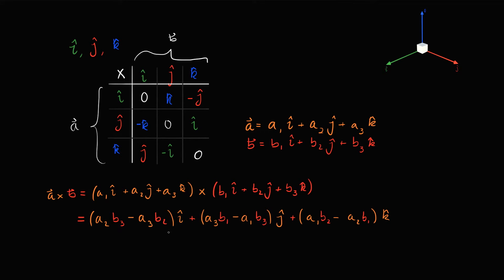So this tells us how to get each component of the cross product from our components of A and B. Working with this is quite cumbersome, right? There's a lot of things to memorize. So instead, we can pack it nicely in a determinant. So what exactly do I mean by that? We have our basis vectors I, J, and K, and then we're going to write A1, A2, A3, and then in the last row, we're going to write B1, B2, and B3.